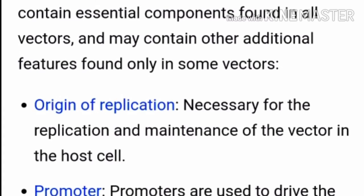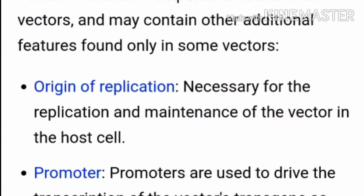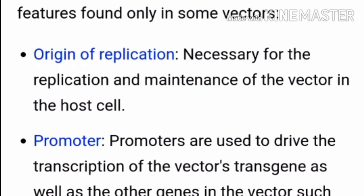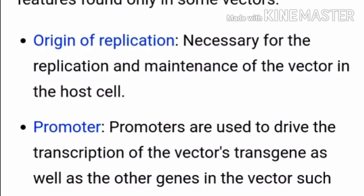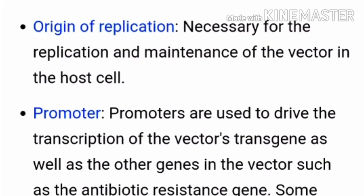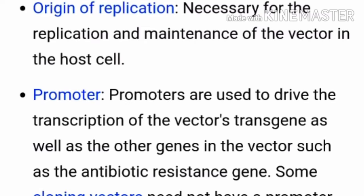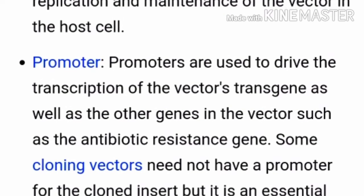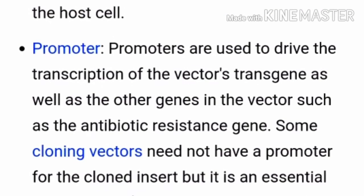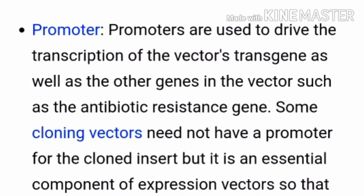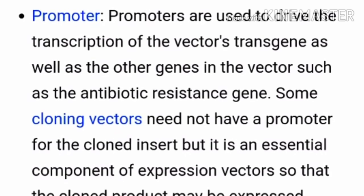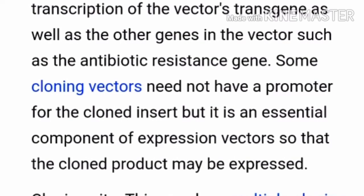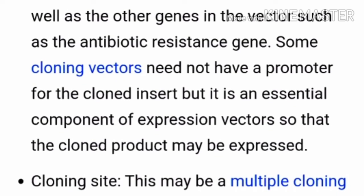The modern artificially constructed vectors contain essential components found in all vectors and may contain additional features found only in some vectors. First, the origin of replication is necessary for the replication and maintenance of the host cell. Second, promoters are used to drive the transcription of the vector's transgene as well as other genes in the vector, such as the antibiotic resistance genes.